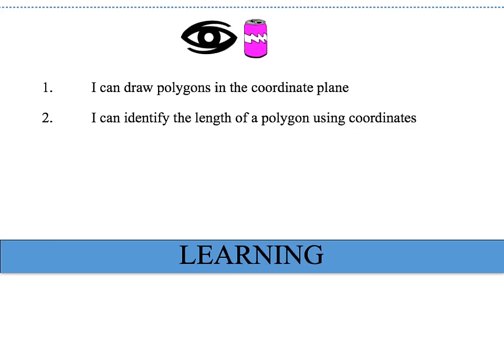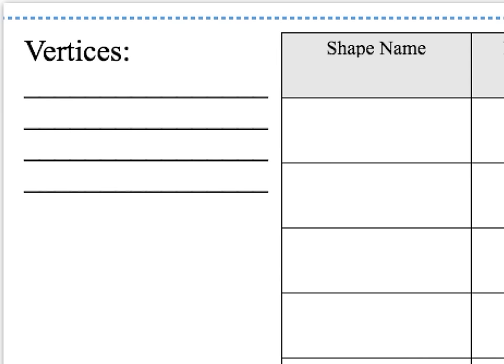This lesson has two learning objectives. The first one says I can draw polygons in the coordinate plane. The second one says I can identify the length of a polygon using coordinates. The vocabulary word we're going to talk about is called vertices, which are the point where two or more sides of a figure meet.